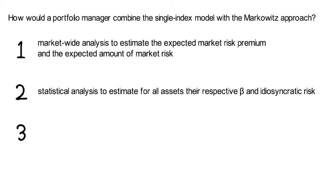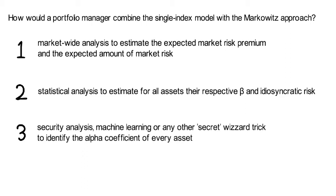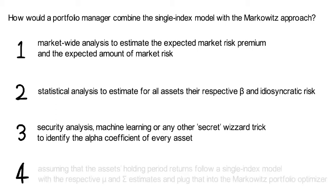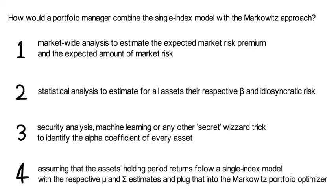Step number three: The asset manager might use security analysis, machine learning, or any other secret wizard trick to identify the alpha coefficient of every asset. Step four: Given what we've said above, he would assume that the assets' holding period returns follow a single index model with the respective mu and sigma estimates, and then plug that into the Markowitz portfolio optimizer.